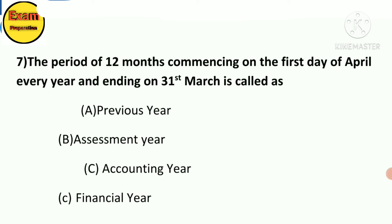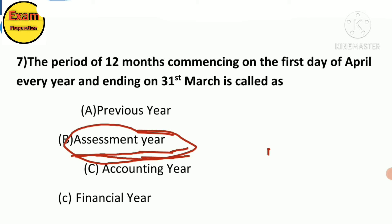MCQ 7: The period of 12 months commencing on the first day of April every year and ending on 31st March is called — A. Previous Year, B. Assessment Year, C. Accounting Year, D. Financial Year. The answer is option B: Assessment Year. The period commencing on the first day of April and ending 31st March is the Assessment Year.